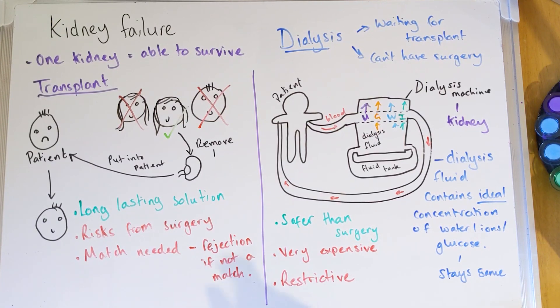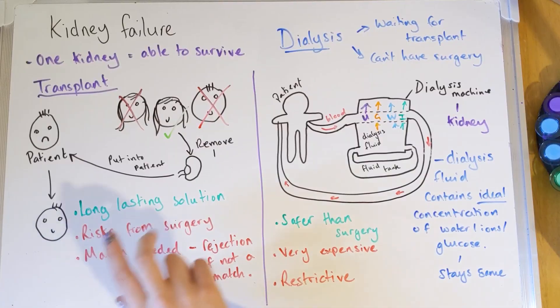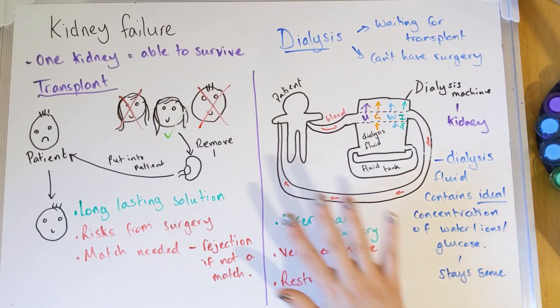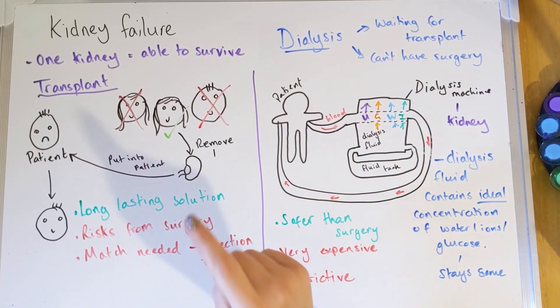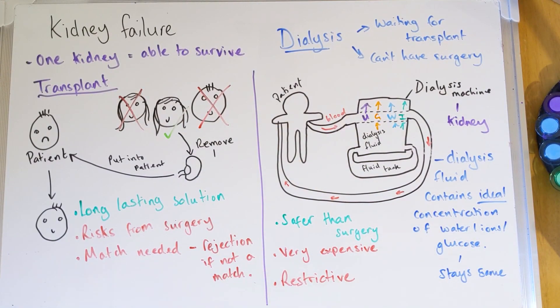So that's kidney failure, transplant, and dialysis. Make sure you've got notes on the pros and cons of both. For transplants: you need a tissue match, any surgery is risky, but it's a long-term solution. For dialysis: it's quite advanced but really expensive and restrictive. That will do us for today — make sure you join us again soon and I'll see you all very soon next time.